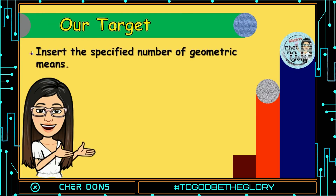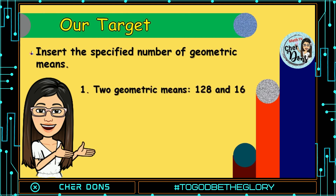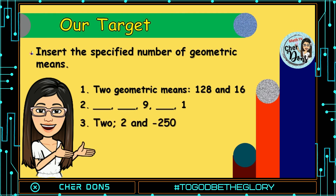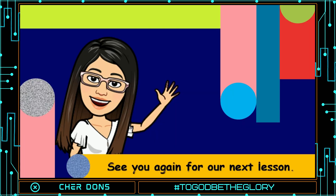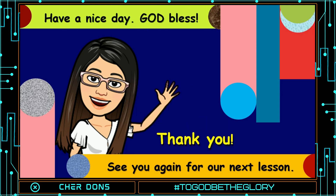Now it's your time to practice. Insert the specified number of geometric means. Number 1: insert 2 geometric means between 128 and 16. Number 2: find the missing terms for blank, blank, 9, blank, and 1. Number 3: insert 2 geometric means between 2 and negative 250. Don't forget to type your answer in the comment box so we can check it. Good luck! I hope you enjoyed our discussion for today. See you again for our next lesson. Thank you, have a nice day, and God bless everyone!